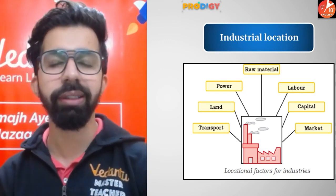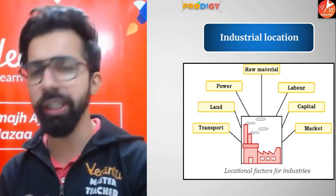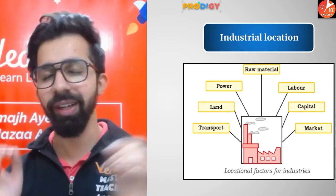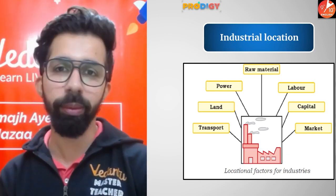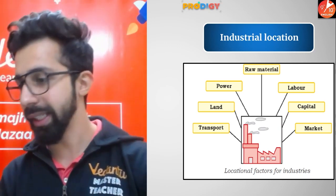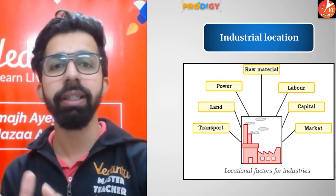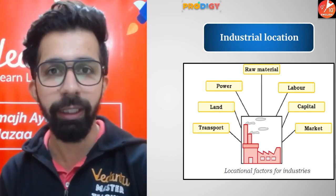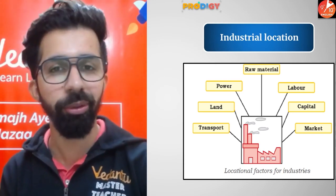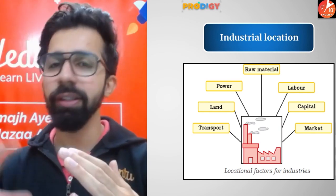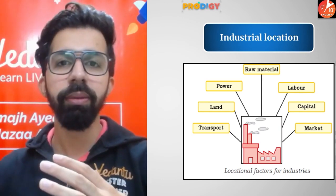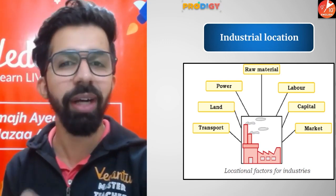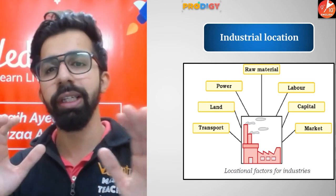Now let's understand the factors favorable for the localization of any industry. Raw material availability is a very important factor — raw material should be easily available. We need skilled and unskilled labor to work in factories. We need capital — money to purchase raw material. We need power supply, land to establish the factory, and efficient transportation and communication systems for the supply of raw materials and finished products to the market.